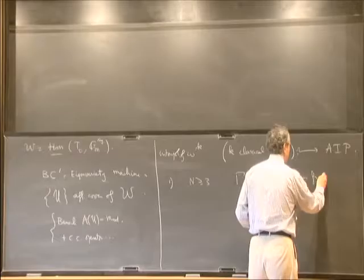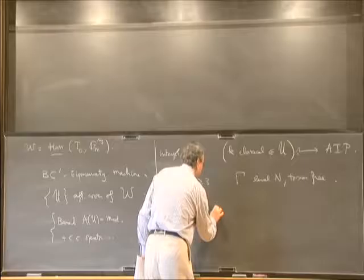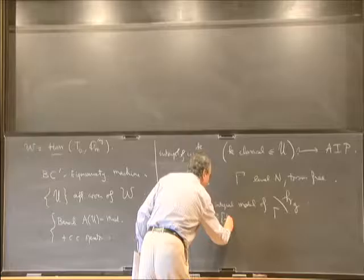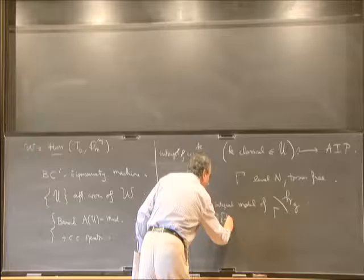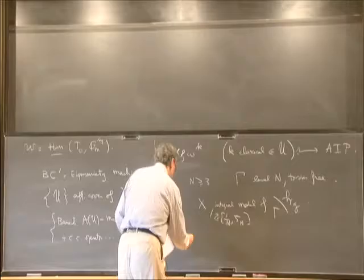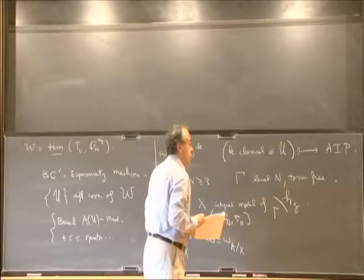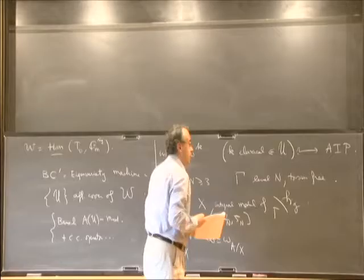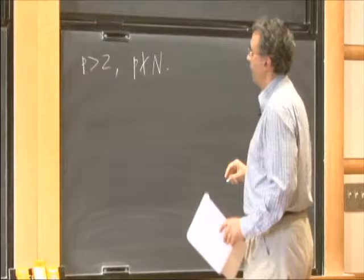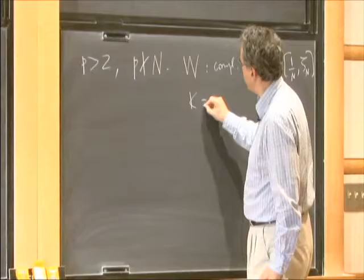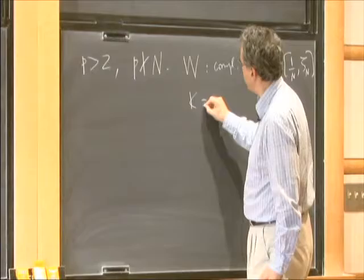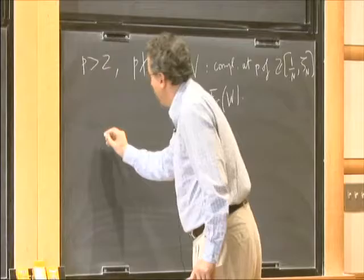We start with the Siegel variety. We fix an integer, a level group Gamma_3, and an integral model X of the Siegel variety over a ring like Z[1/n, zeta_n]. It comes with a universal Abelian variety and the sheaf of relative differentials. We fix a prime p not dividing n, and consider the completion at p of this base ring and its field of fractions.